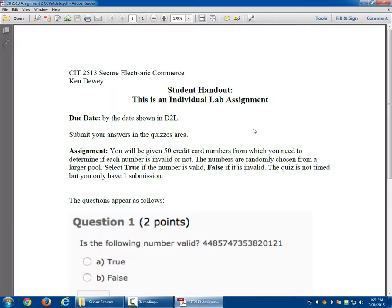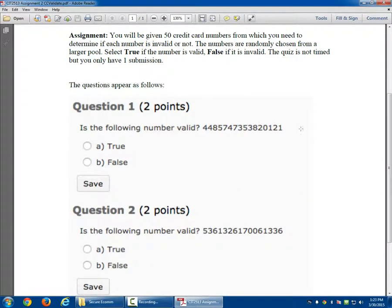It says you'll be given 50 credit card numbers which you need to determine if they are valid or not. Select true if it's valid, false if it's invalid. The quiz is not timed, but you can only have one submission. Just save your time each time you do it. Then you can go back into it. It will say your time has expired, but don't worry about it.